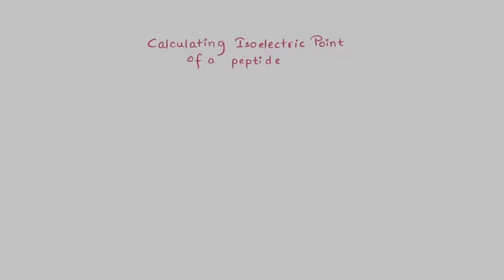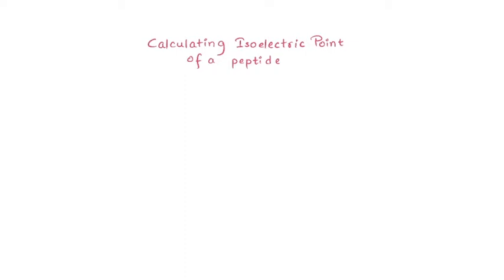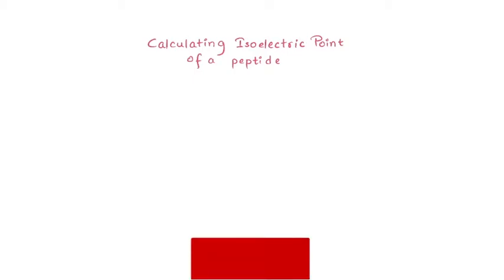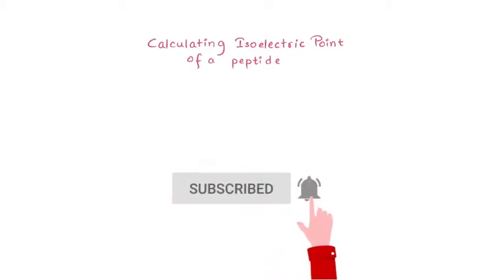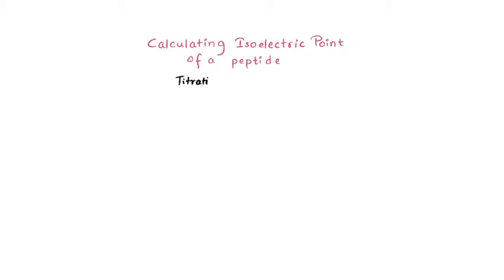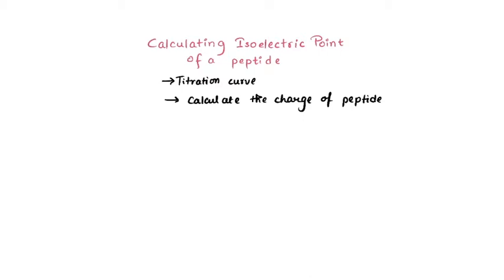Welcome back. In this video we are going to learn how to calculate the isoelectric point of a peptide. To do that you need a little bit of prerequisite knowledge on the titration curve of amino acids and how to calculate the charge of a peptide. I've already made videos on those two topics — links are in the description — so watch those first and then come back to this video.